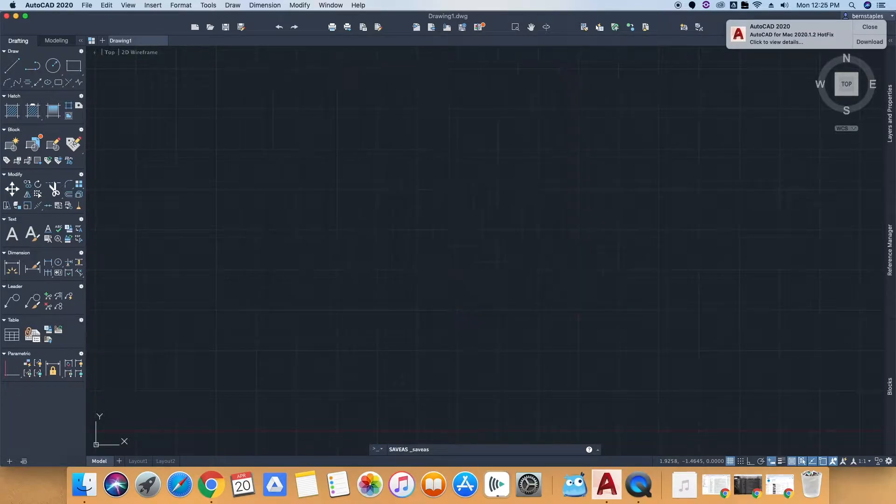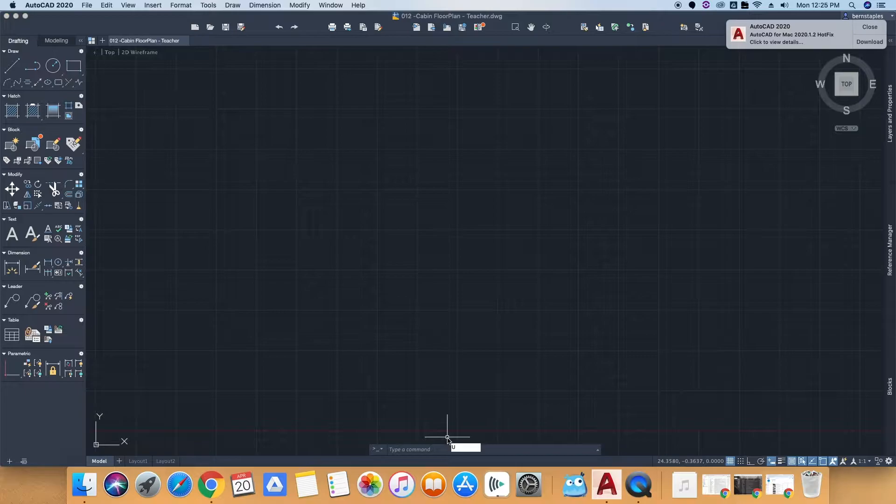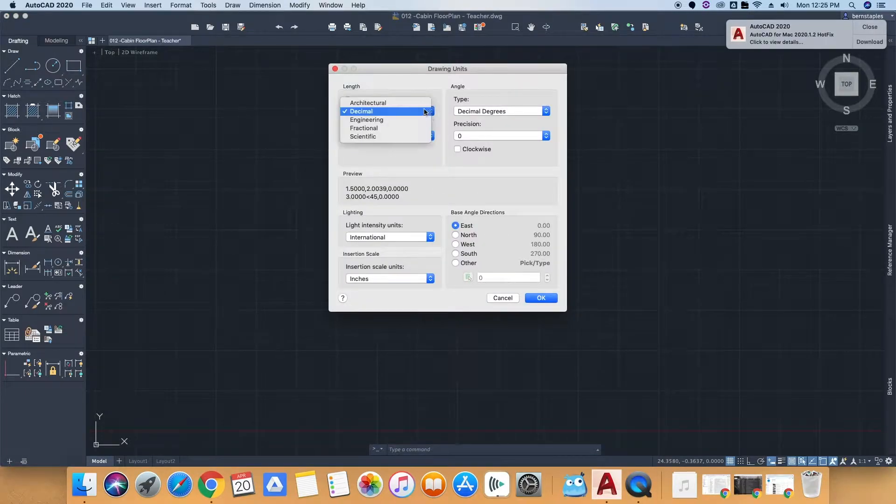To change the units just type units. You're going to want to change it to architectural and set the precision to quarter inch.